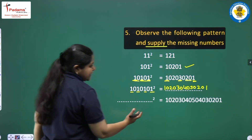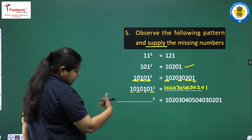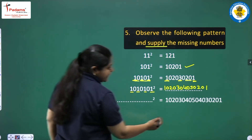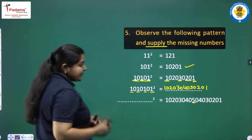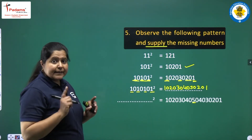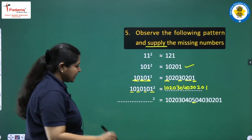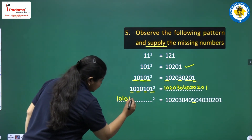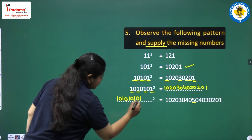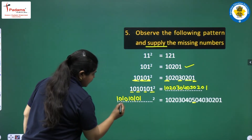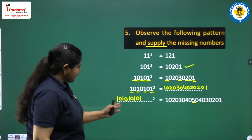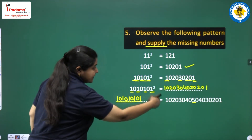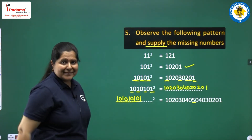Now we need to write the number whose square this is. The center goes up to 5, meaning how many times should 1 appear? 5 times: 1, 2, 3, 4, 5. So the number is 1, 0, 1, 0, 1, 0, 1, 0, 1 — it is actually this number whose square is that large number.